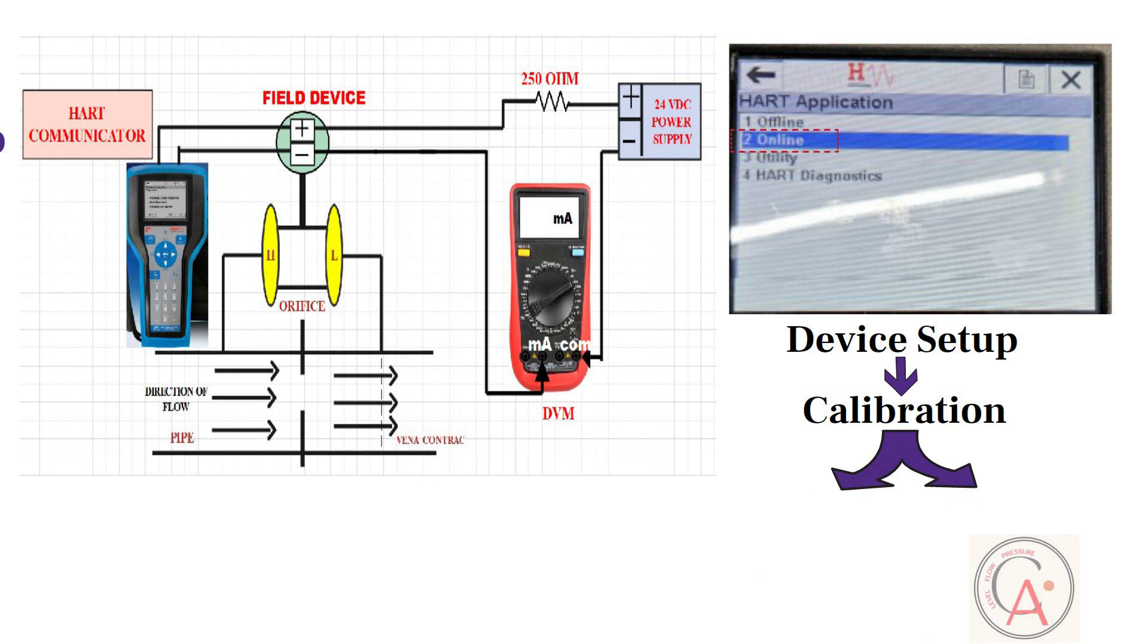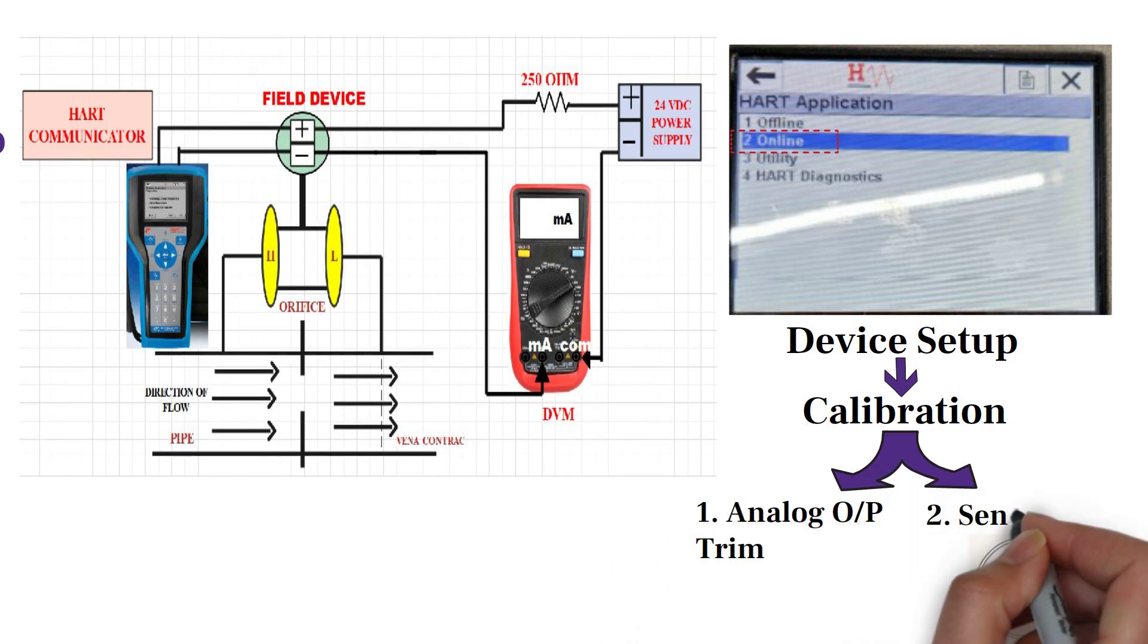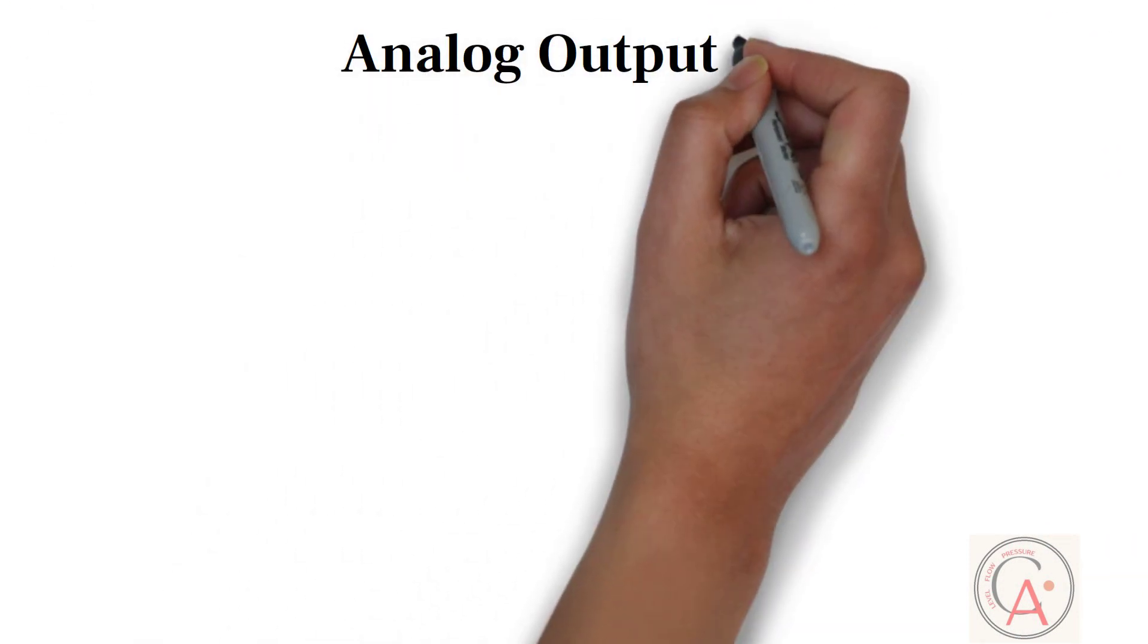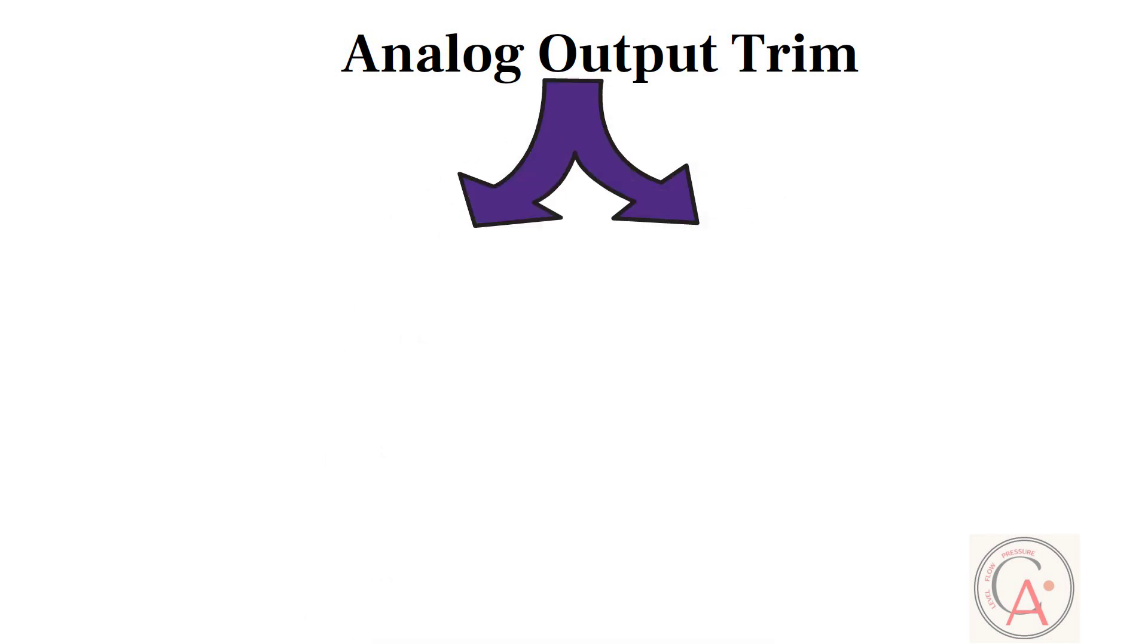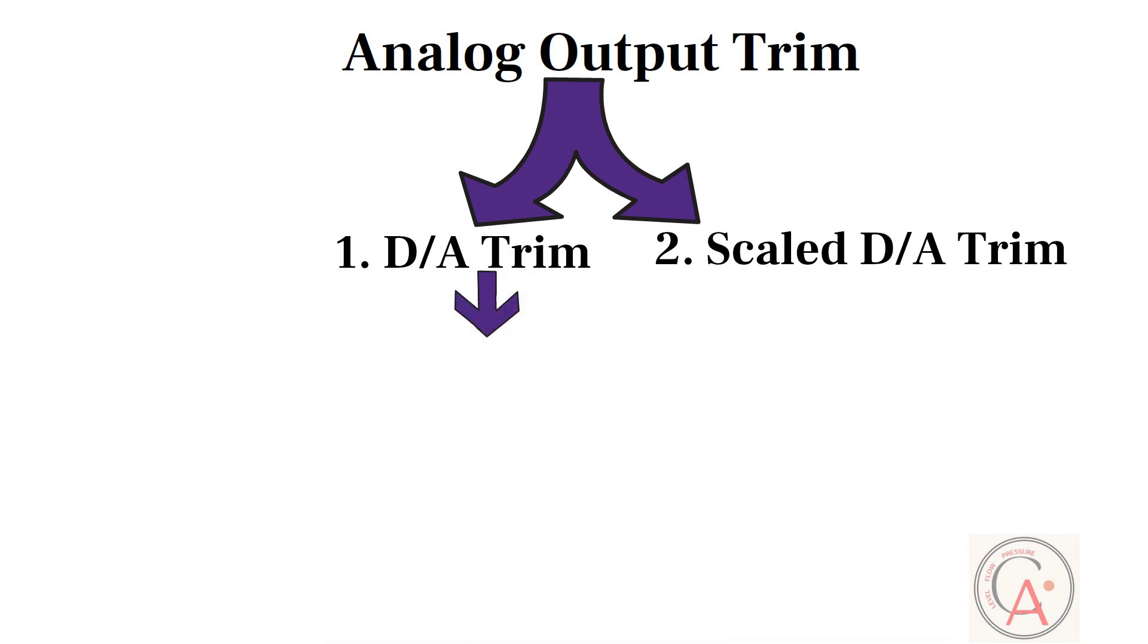Calibration menu has two options. First option is for analog output trim, and second option is for sensor trim. Select analog output trim option, and then select digital to analog trim option. At this time, connect reference meter message appears. Select OK and press ENTER button.